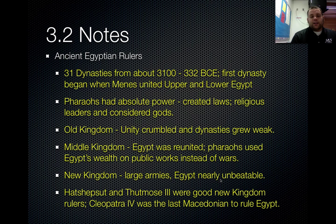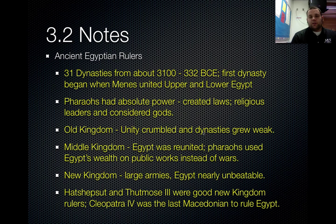Lastly, the New Kingdom was towards the end of Egypt's time. This is when they had large armies and Egypt was nearly unbeatable. The only people that were able to defeat them were the Romans, around 332 BCE.